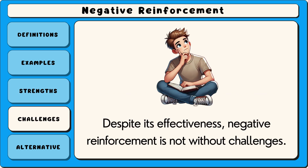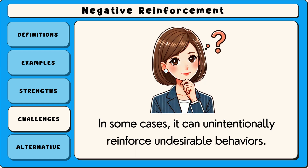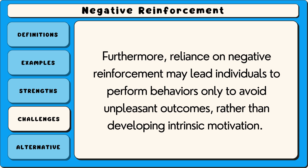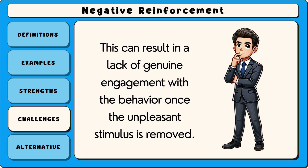Despite its effectiveness, negative reinforcement is not without challenges. In some cases, it can unintentionally reinforce undesirable behaviours. For example, if a child throws a tantrum to avoid a difficult task and the task is then removed, the child may learn that tantrums are an effective way to escape responsibility. Furthermore, reliance on negative reinforcement may lead individuals to perform behaviours only to avoid unpleasant outcomes, rather than developing intrinsic motivation. This can result in a lack of genuine engagement with the behaviour once the unpleasant stimulus is removed.